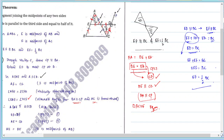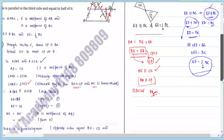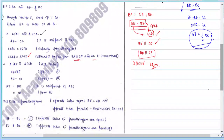So both parts are proved: the line joining the midpoints is half of the third side, and it is parallel to the third side. The Midpoint Theorem is proved. Best of luck for tomorrow's exam. Thanks a lot.